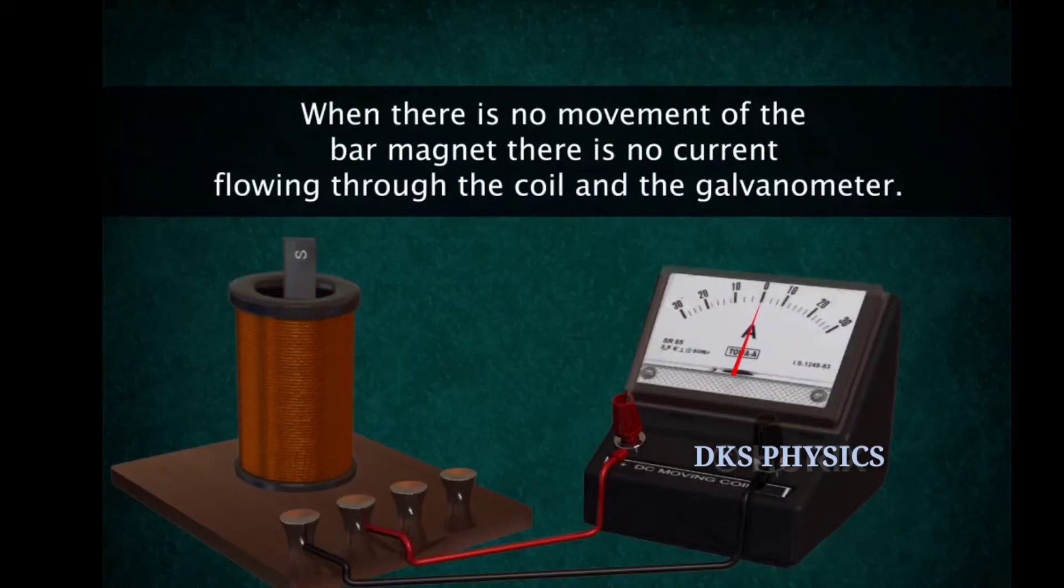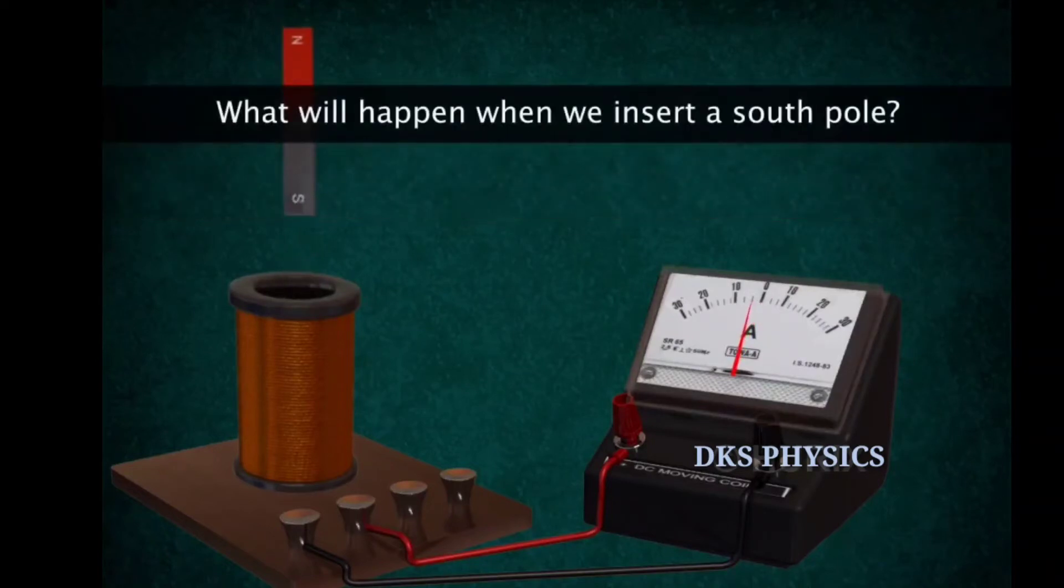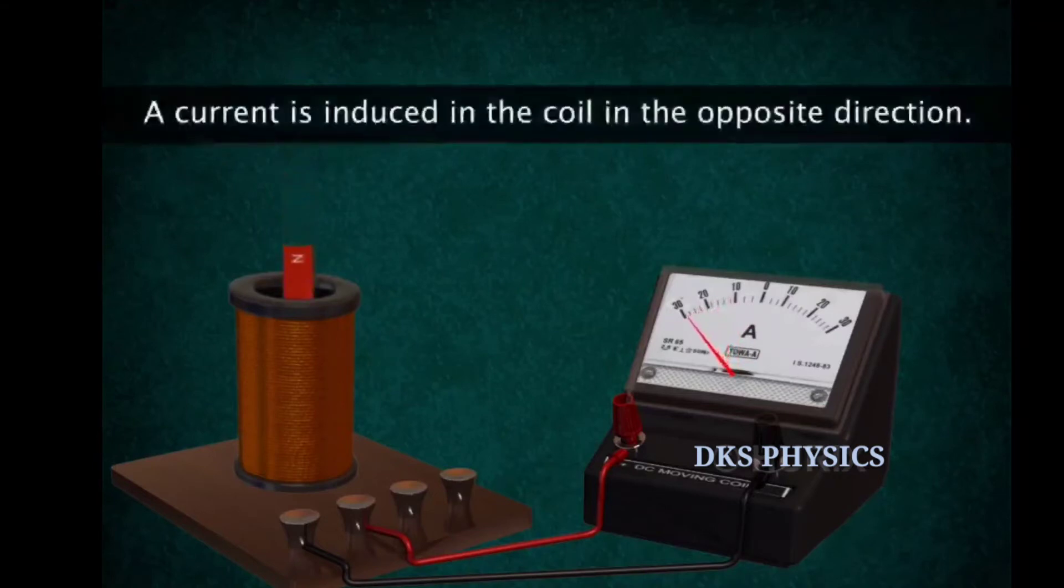The pointer in the galvanometer remains at zero when there is no current flowing through it. What will happen when we insert a south pole inside the coil? The deflection is in the opposite direction in the galvanometer, indicating a change of direction in the current.